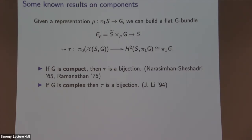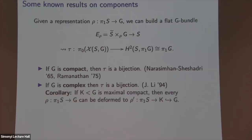When G is complex, Jun Li also proved that the map τ is a bijection, so every component of the character variety for complex groups is labeled by a topological invariant. For complex groups, they're homotopic to their maximal compact subgroup — which is also a simple Lie group — meaning every representation into a complex group can be continuously deformed to one which factors through a compact group. Think of these examples as: we know the answer and there aren't any extra interesting components.